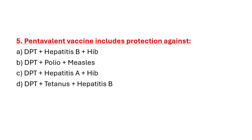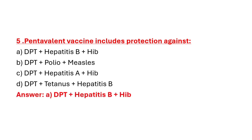Question 5: Pentavalent vaccine includes protection against. Option A: DPT plus Hepatitis B plus Haemophilus influenzae type B. Option B: DPT plus polio plus measles. Option C: DPT plus Hepatitis A plus Haemophilus influenzae type B. Option D: DPT plus tetanus plus Hepatitis B. Correct answer is Option A: DPT plus Hepatitis B plus Haemophilus influenzae type B.